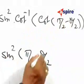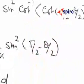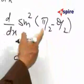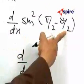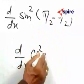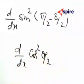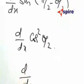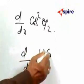That is cos theta by 2, that is cos squared theta by 2, or that is d by dx of 1 plus cos theta divided by 2.